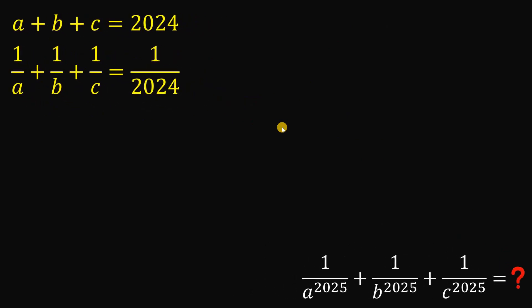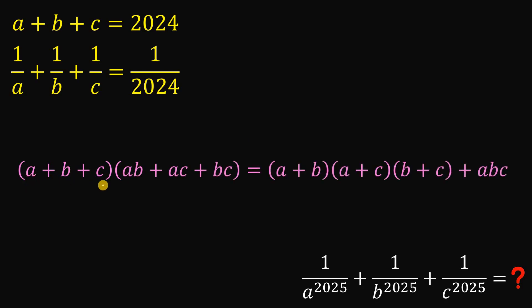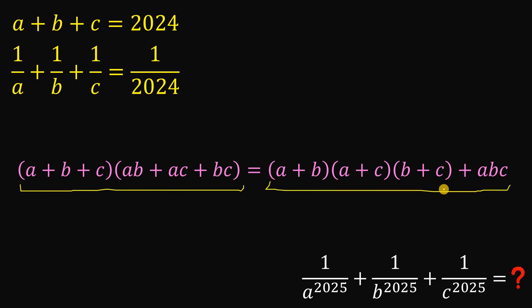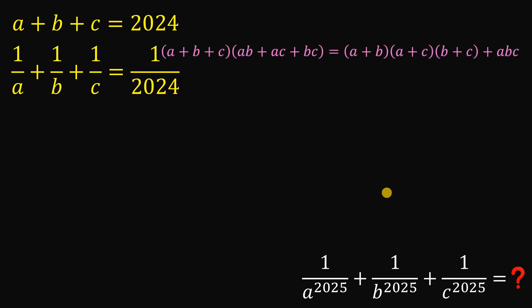This question is inspired by the Vietnamese Mathematical Olympiad. Now, how do you answer this kind of question? One trick is to use this identity: A plus B plus C, multiplied by AB plus AC plus BC, equals A plus B, multiplied by A plus C, multiplied by B plus C, plus ABC. You can prove this on your own by expanding both sides to verify that the left-hand side and right-hand side are the same. We will use this identity to answer this question.